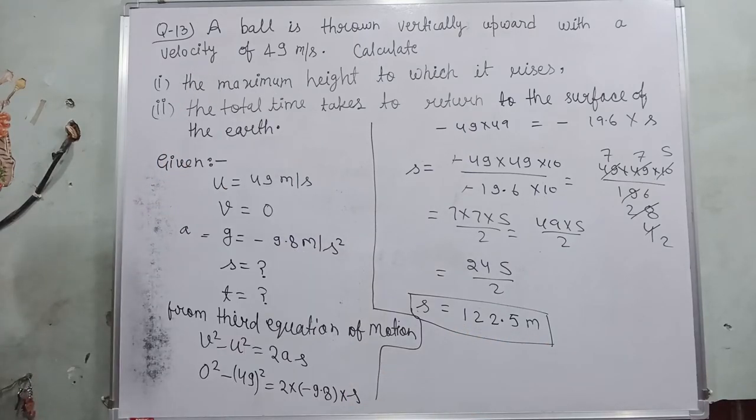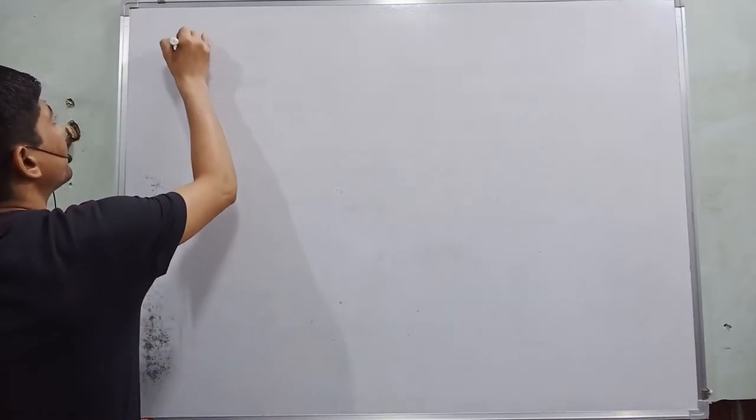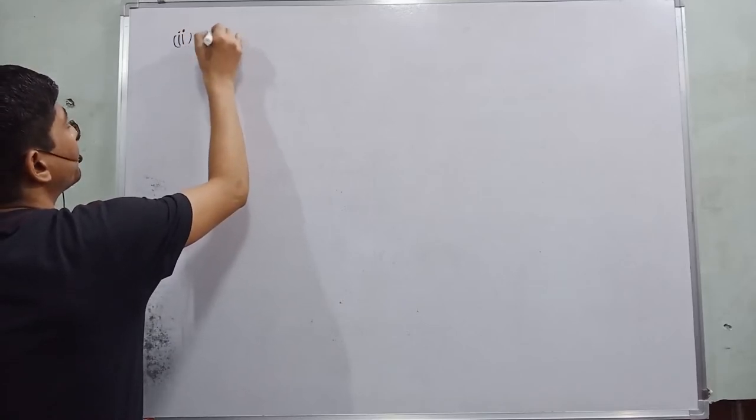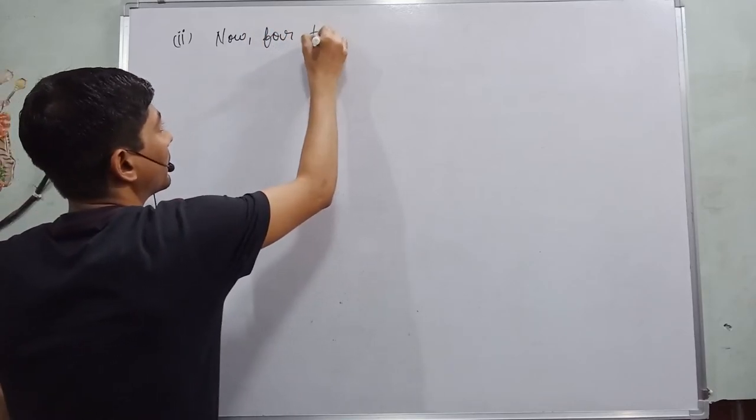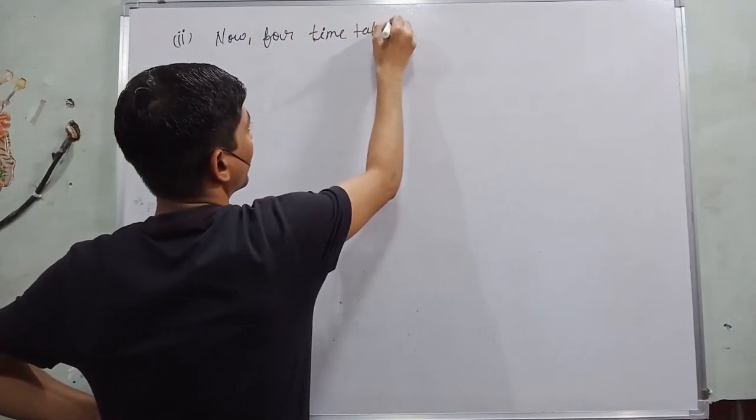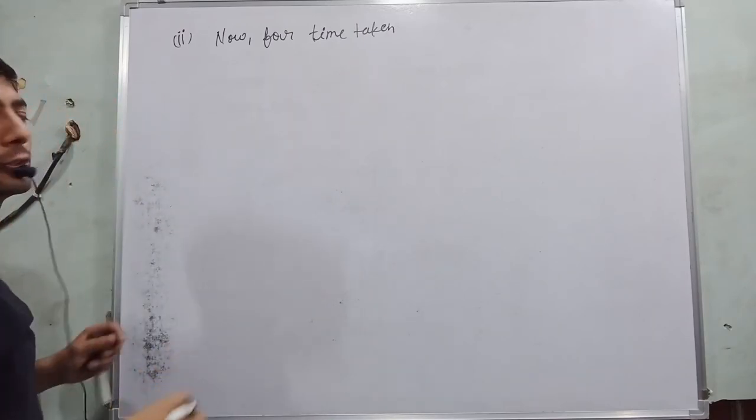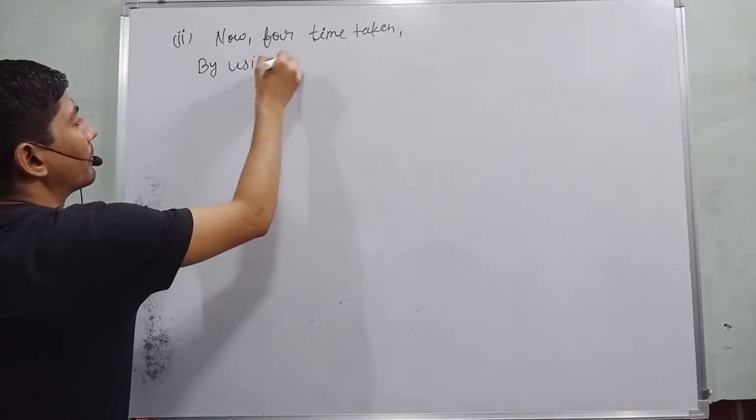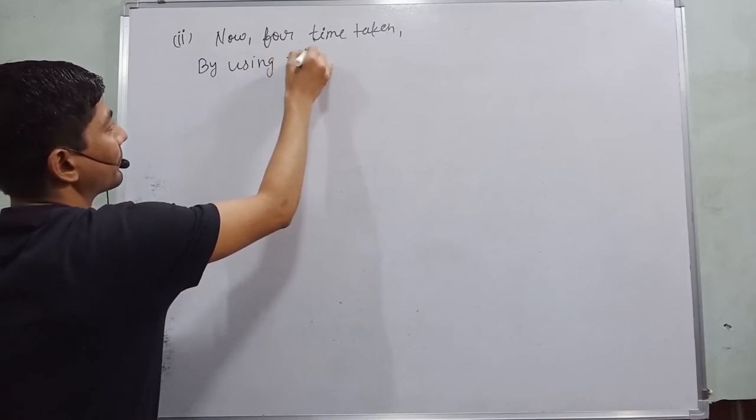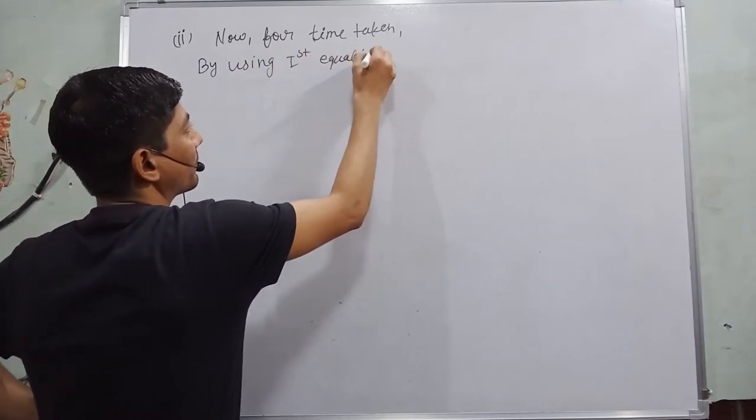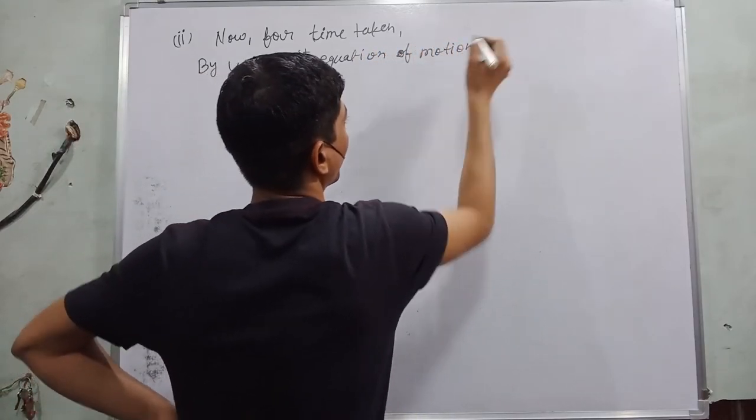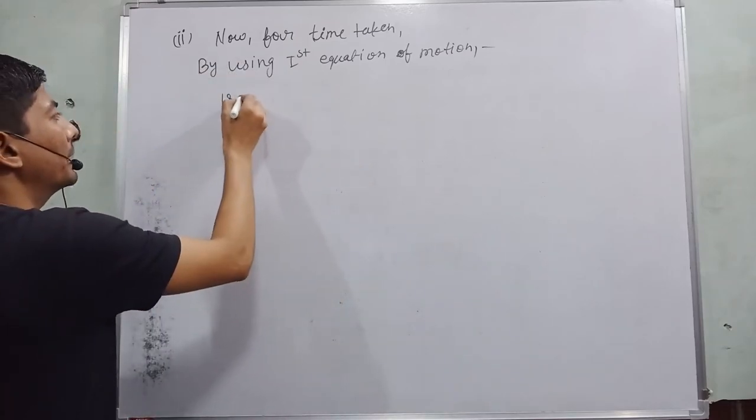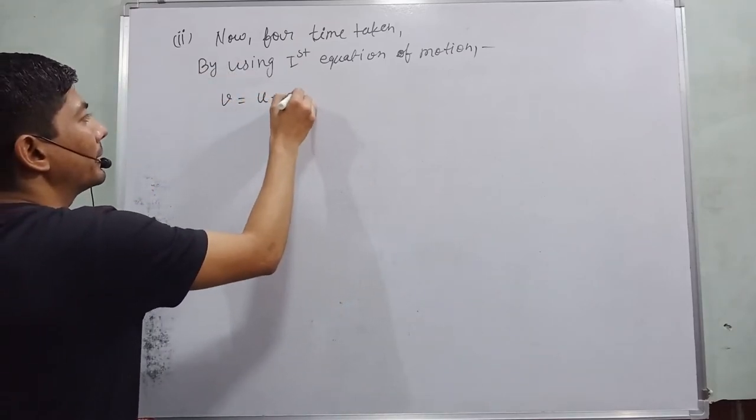If you want, you can write down or take a screenshot. After that, I move towards the time taken. Now for time taken, we use first equation of motion. By using first equation of motion, the formula is v is equal to u plus gt.